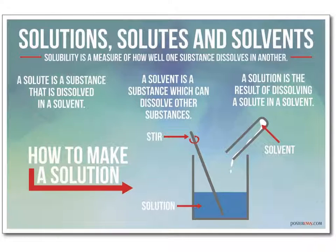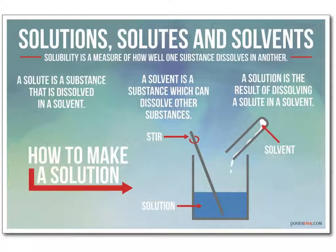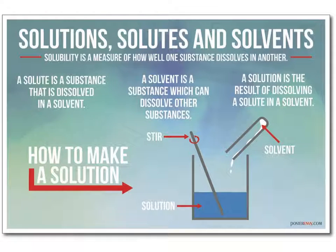Solubility is the measure of how well one substance dissolves in another. It's a relative scale and very dependent on the system. For example, salt dissolving in water has fairly high solubility because we can dissolve a lot of salt in water. Dissolving salt in oil would be very low solubility because we can't really dissolve much salt in oil.